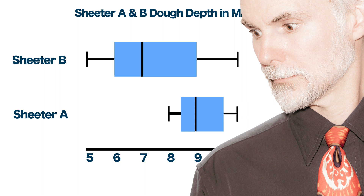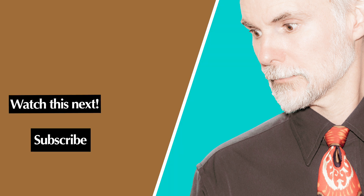In summary, a box and whisker plot is an effective way to present five pieces of information about a data set. With these numbers, you can show how tightly the data is grouped as well as the symmetry of a data set. Taking a second look at the measurements for sheeter A, the lower quartile is outside the manufacturing specifications and thus warrants a minor recalibration. Thanks for your time, and I look forward to discussing another way to visualize your data so that you can make your point.